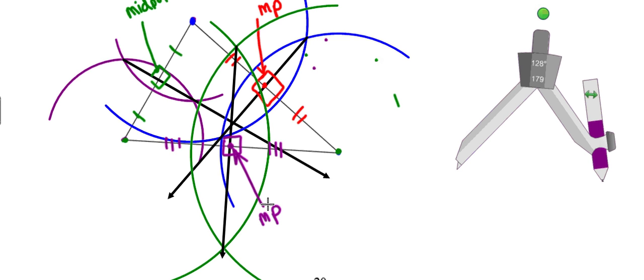One neat thing to notice here is that all three perpendicular bisectors intersected at one point. If your construction was precise, yours should intersect at one point — or pretty close to it — as well.